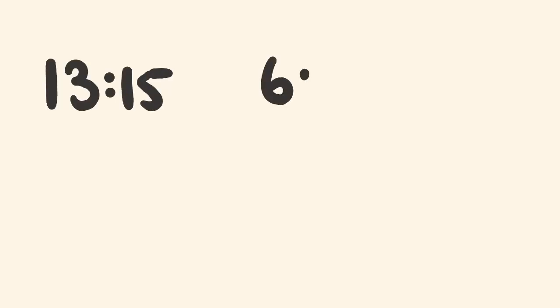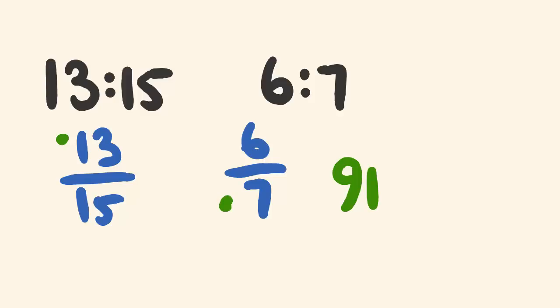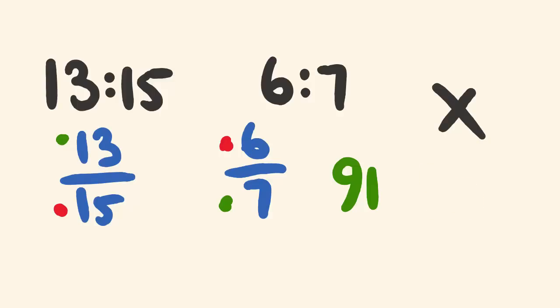Here's another example: 13 is to 15 compared to 6 is to 7. Writing them as fractions: 13/15 and 6/7. Cross multiplying: 13 times 7 is 91, and 15 times 6 is 90. They're pretty close but not the same number, so these two ratios are not in proportion.